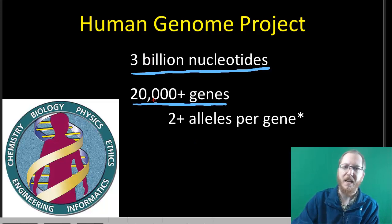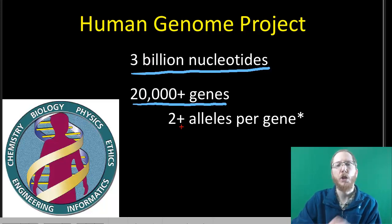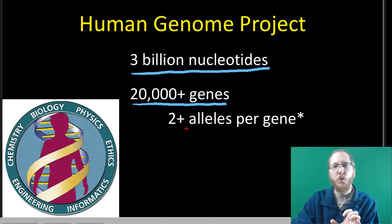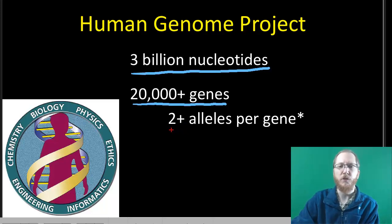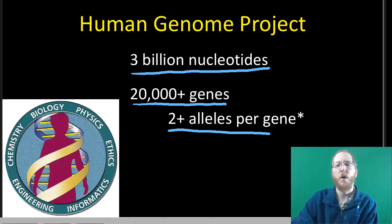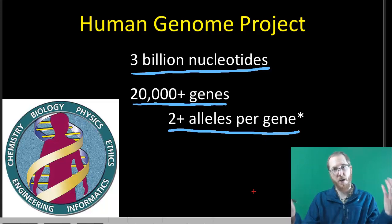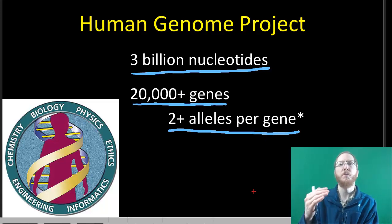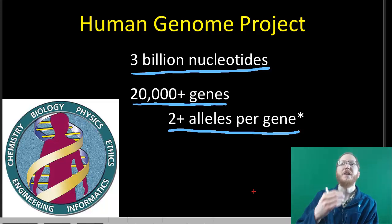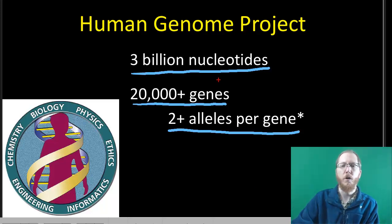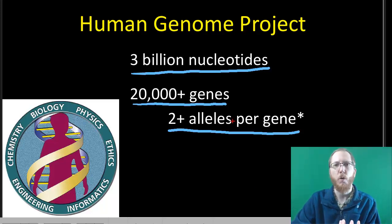Besides discovering how many genes we have, they were also able to look at the differences between individuals. They found that most of our genes have more than one allele, meaning there were differences — not just one type of hair color, for instance, but multiple alleles — so individuals were not identical, which accounted for much of the variation observed.